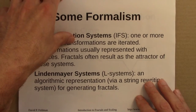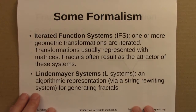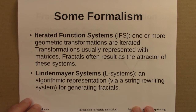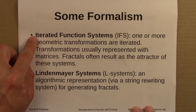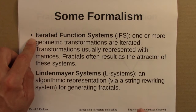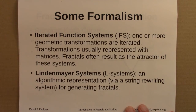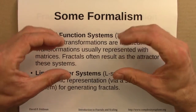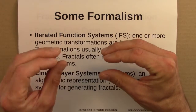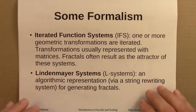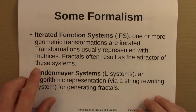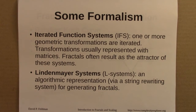There are a couple different ways to formalize these geometric systems. One is known as iterated function systems. In an IFS, you have one or more geometric transformations. Usually you start with a shape, shrink it, make a couple copies, and maybe twist those copies a little bit. Those transformations are usually represented with matrices, so they're things you can start doing algebra with.